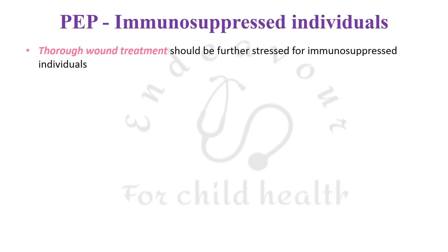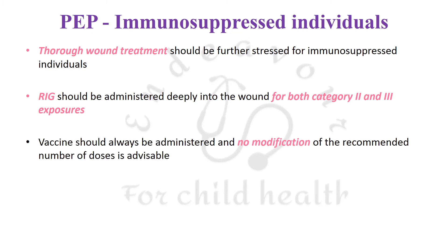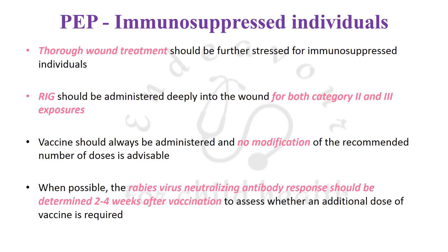Regarding post-exposure prophylaxis in immunosuppressed individuals: thorough wound treatment should be stressed, and rabies immunoglobulin should be administered for both category two and category three — note that in immunosuppressed patients, category two also requires rabies immunoglobulin. Vaccine should always be administered, and no modification of the recommended number of doses is advisable. When possible, the rabies virus neutralizing antibody response should be determined two to four weeks after vaccination to assess whether an additional booster dose is required.